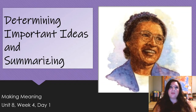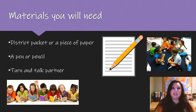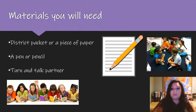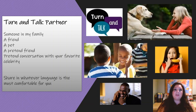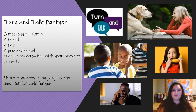Our lesson for today and the work we'll be doing will be around determining important ideas and summarizing. Materials you will need are a district packet or a piece of paper, a pen or a pencil, and a turn and talk partner. Your turn and talk partner can be anyone in your family who is available to work with you — a friend if you have one close by, or if you're hanging out with a friend virtually. It could be your pet, a pretend friend, a pretend conversation with one of your favorite celebrities or your teacher. Whatever language you feel comfortable with is the language you can turn and talk with a partner.